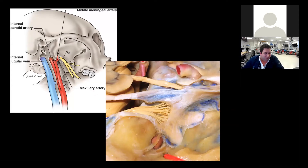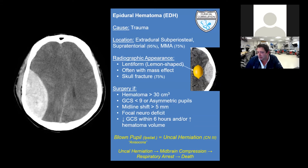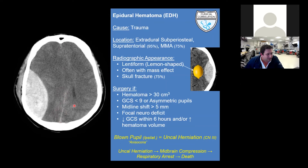Back to the middle meningeal artery, which is clinically important because it is the most common site of epidural hematomas. On the left, we have an axial non-contrast CT showing a large right biconvex hyperdensity consistent with an epidural hematoma. As we can see, it's causing mass effect, which is also causing midline shift — we can identify the falx right here and see it's not in the midline, being displaced to the contralateral side.